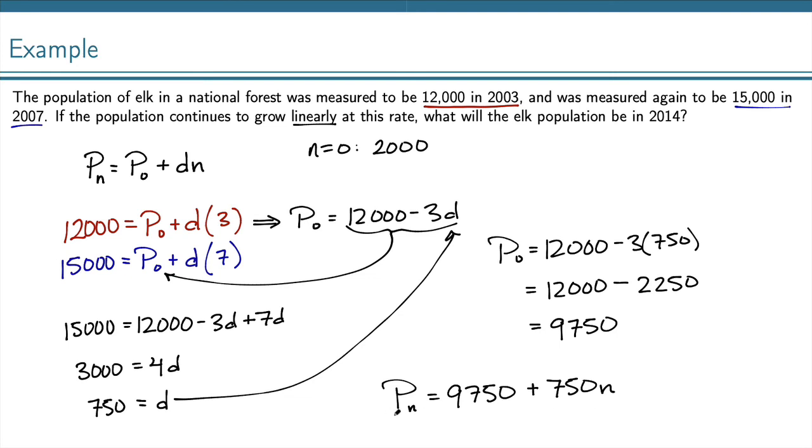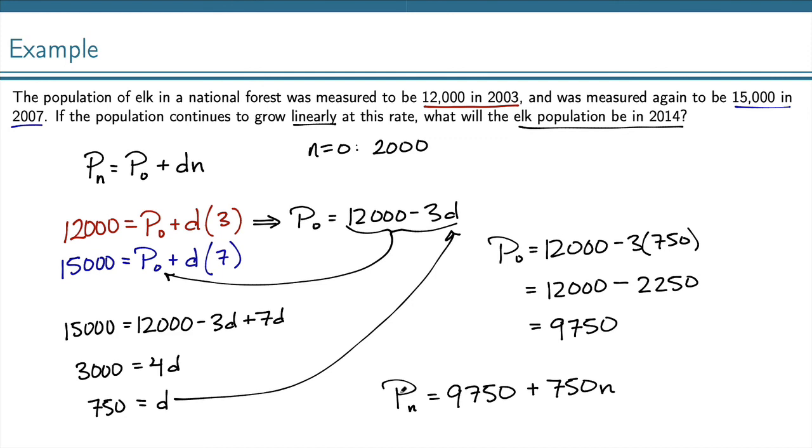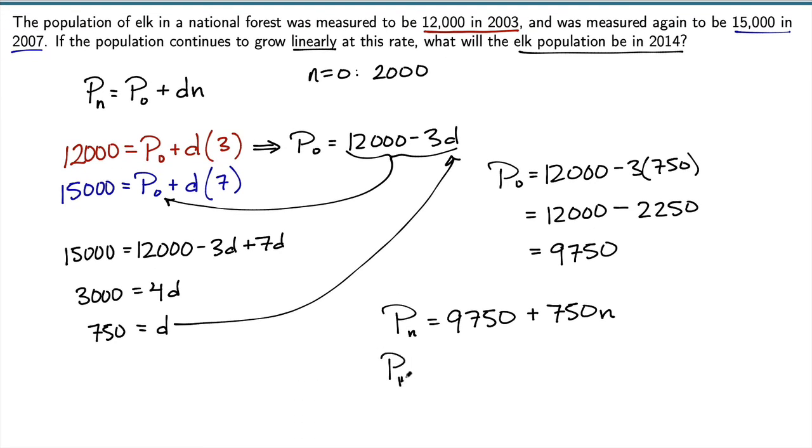This explicit formula I can now use to find the elk population in 2014. If n equals 0 is 2000, then 2014 is n equals 14. So, P sub 14 is 9,750 plus 750 times 14.